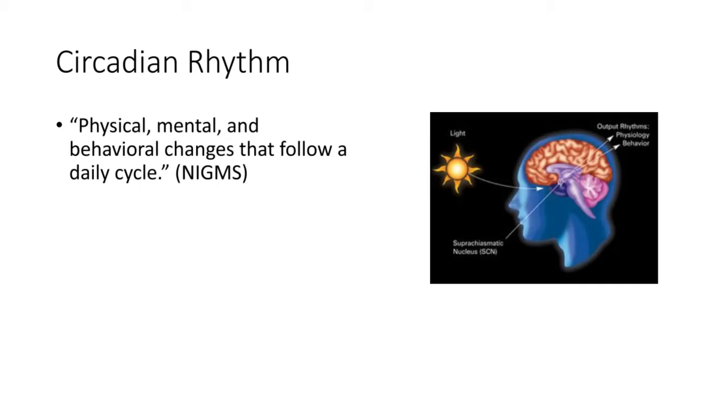Evolutionary theory would postulate that having evolved on a planet that experiences light and dark cycles, a lot of our body is tuned into this rhythm. And not just in the brain, but all across the body, there are changes in physiology and behavior that follow a daily cycle.